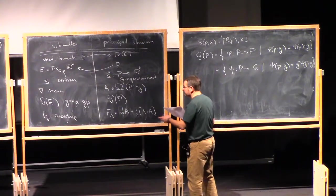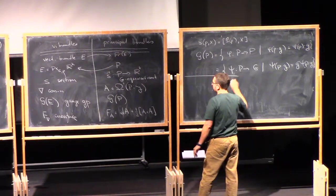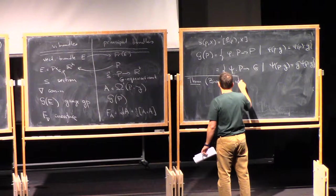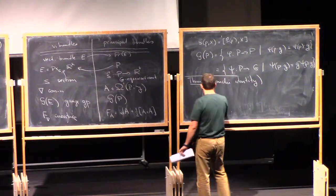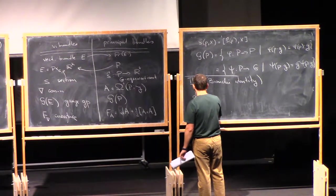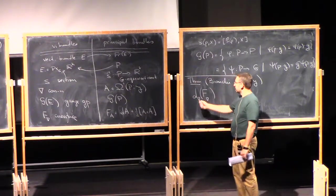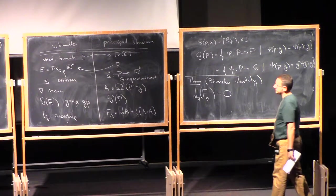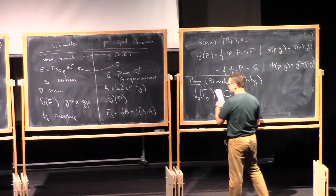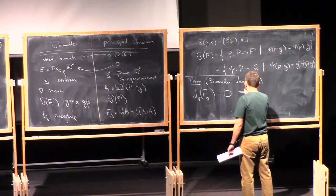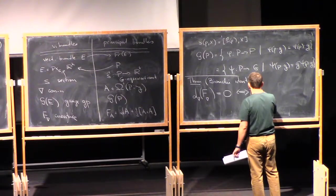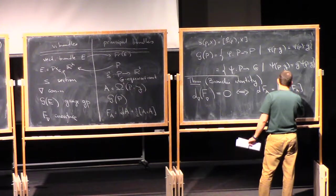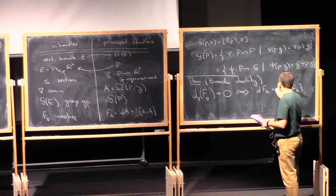Now, the most important property of the curvature is the so-called Bianchi identity. The theorem is that if you take nabla and apply this to the curvature, so the curvature is a two-form, if you apply nabla to this, you will get a three-form on the manifold with values in the endomorphism bundle. This turns out to be zero. Or, if you think of the connection in terms of the principal bundle, or locally, this is the same as saying that d of F_A equals A wedge F_A up to a sign, minus A wedge F_A.